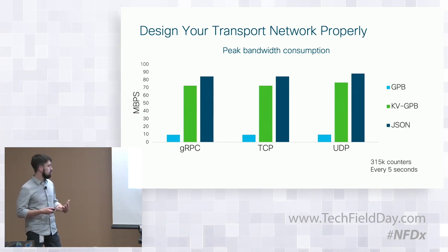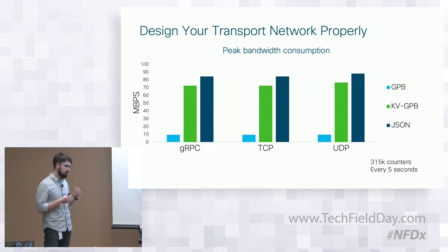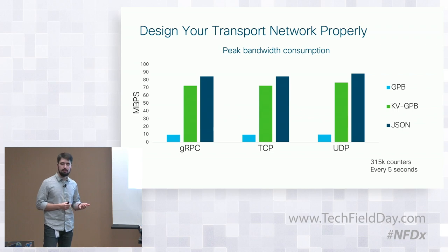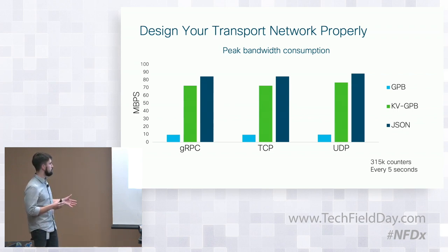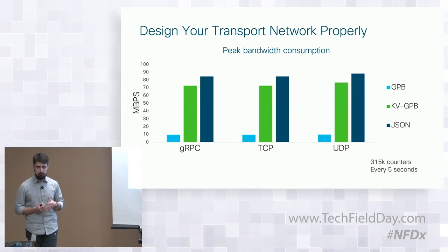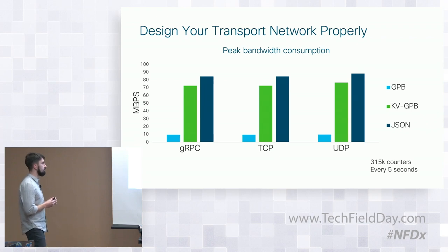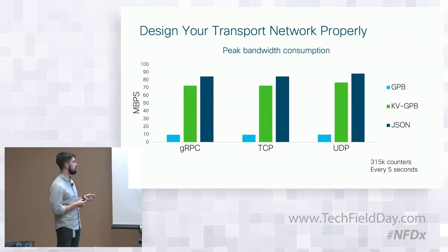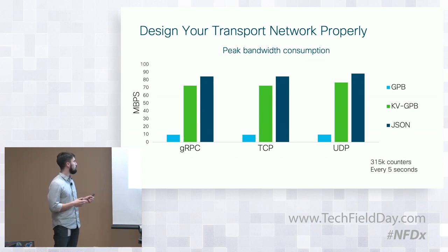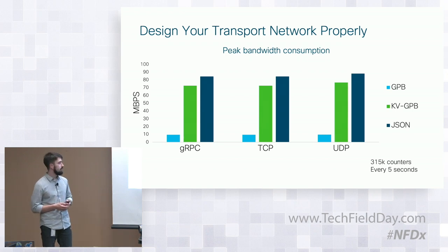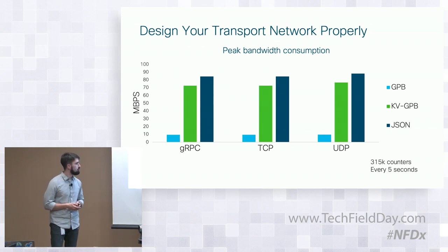Once you start to use telemetry in production, you should consider how much data you want to transfer — it's not just server considerations, it's about transferred counters. If you take a look at current graphs, they're produced with 300K counters every five seconds out of a device, and we can see how much data is generated for each encoding and each transport.